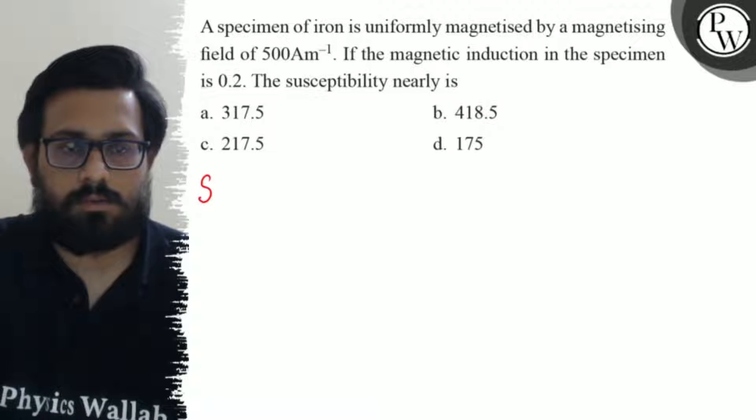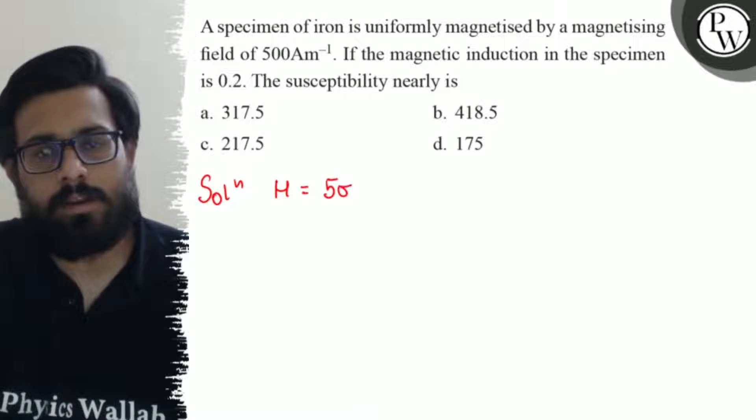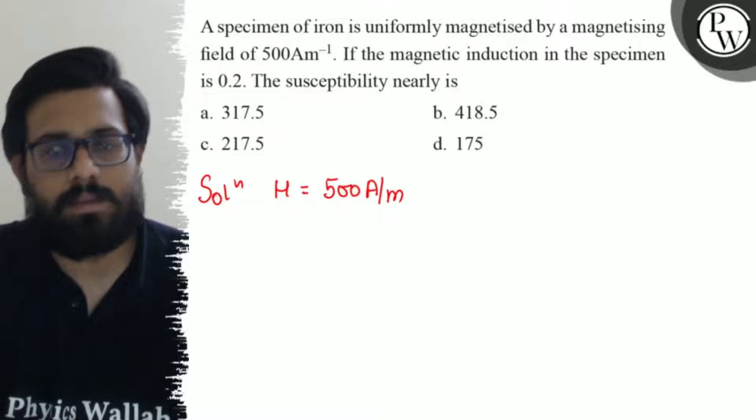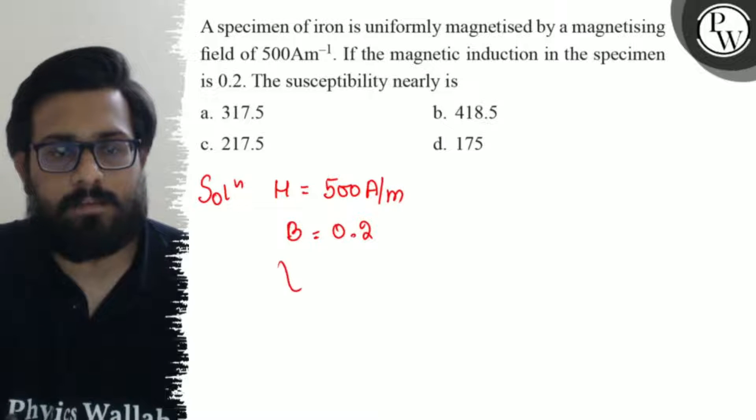In this question, we have the magnetizing field H as 500 ampere per meter. We also have the magnetic induction B as 0.2, and we need to find the magnetic susceptibility.